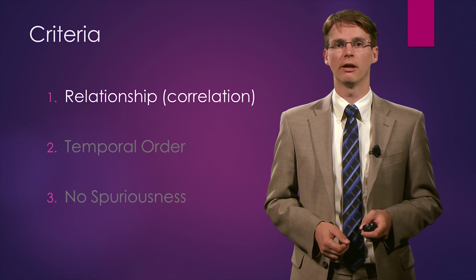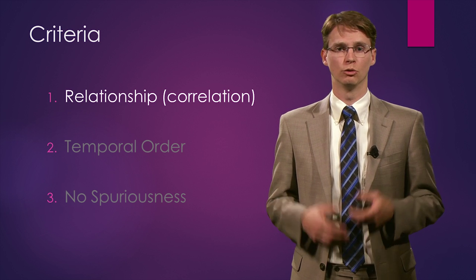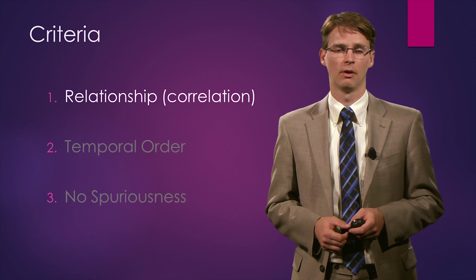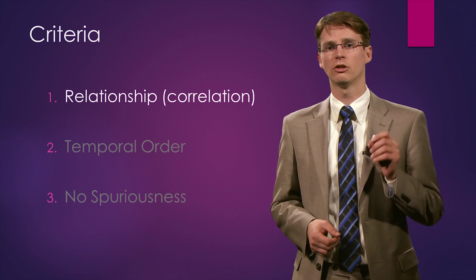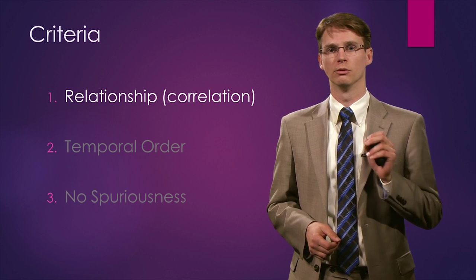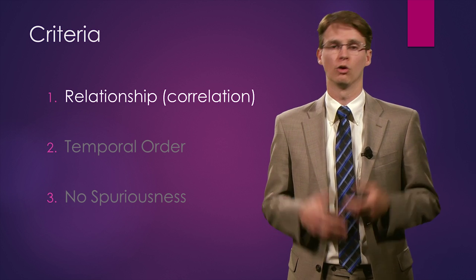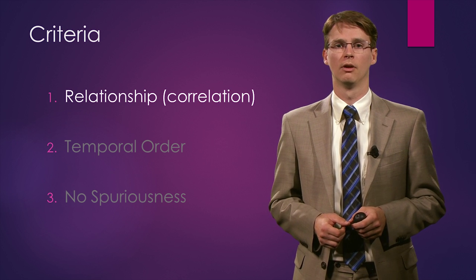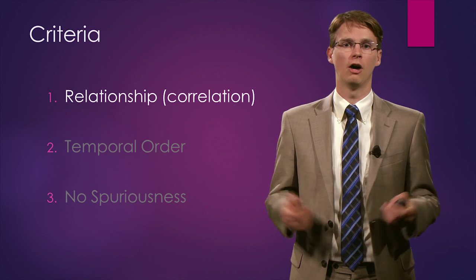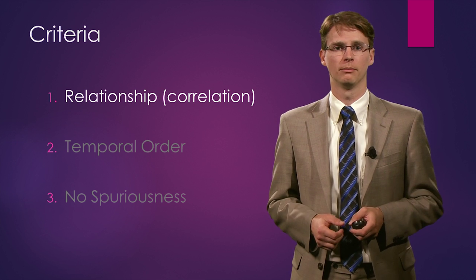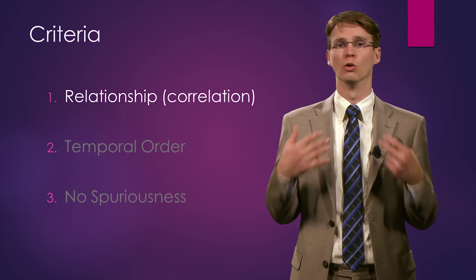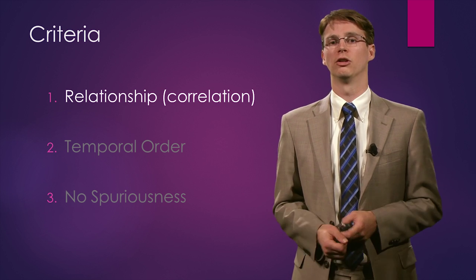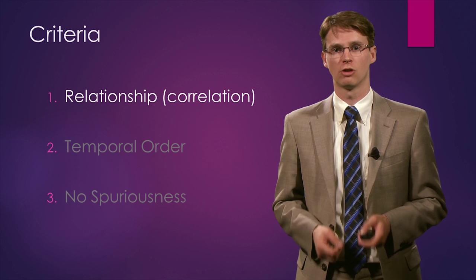Three criteria have to be met in order to conclude or prove causality. The first one is that there needs to be a relationship, or as we call it, a correlation. This is an obvious requirement because if there's no relationship, we cannot conclude that the relationship is causal.